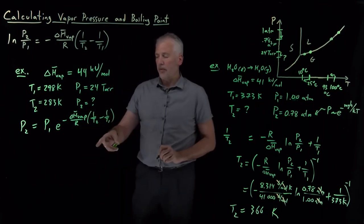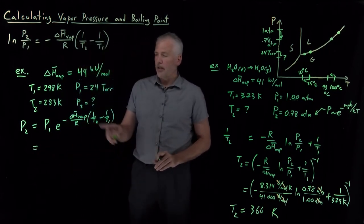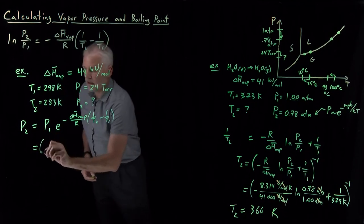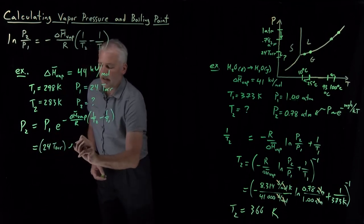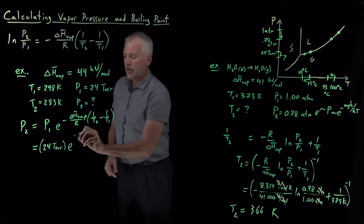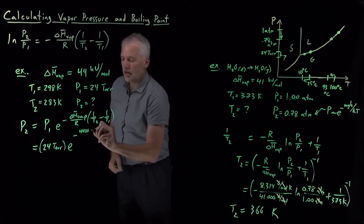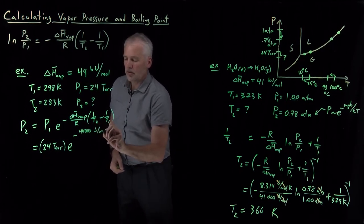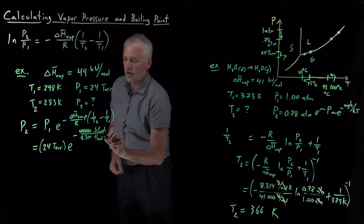So now everything I know is over here on the right side. If we plug numbers in to see how the units work out. P1, we were given it in units of Tor. I've got an exponential up in the exponent of that exponential. I've got an enthalpy of vaporization 44 kilojoules per mole or 44,000 joules per mole divided by the gas constant 8.314 joules per mole Kelvin.